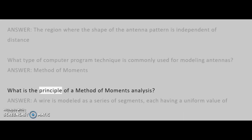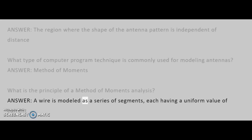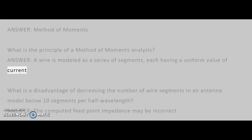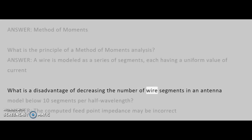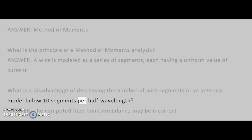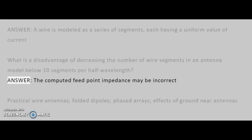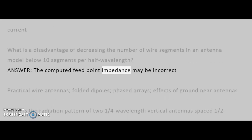What is the principle of a method of moments analysis? Answer: a wire is modeled as a series of segments, each having a uniform value of current. What is a disadvantage of decreasing the number of wire segments in an antenna model below 10 segments per half-wavelength? Answer: the computed feed-point impedance may be incorrect.